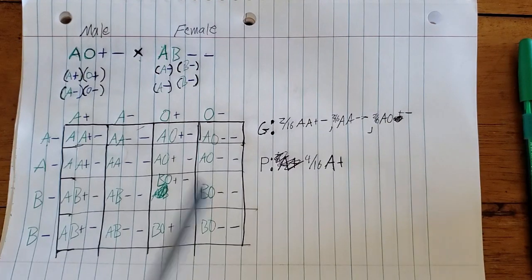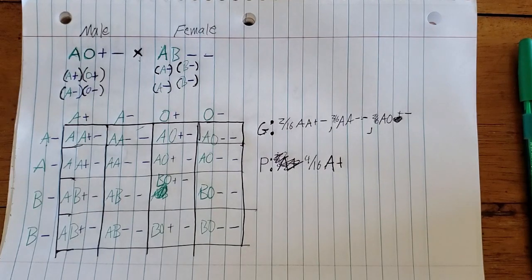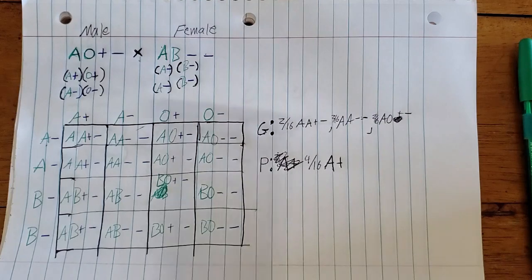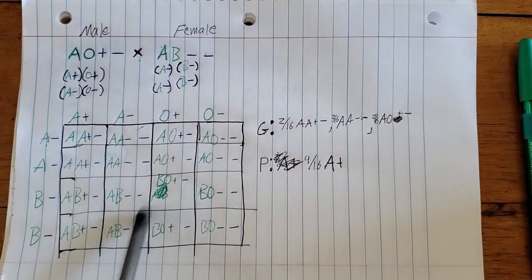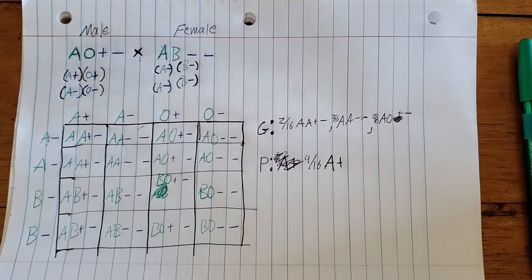These tables are used more for specific questions — like what are the odds of a person having AB negative blood? You could go through and find that only two out of sixteen are likely to be A negative. Hopefully this was helpful. If you still have questions, feel free to put them in the comments and let me know. Good luck with these dihybrid crosses.